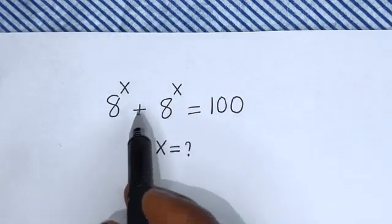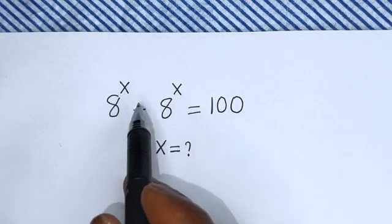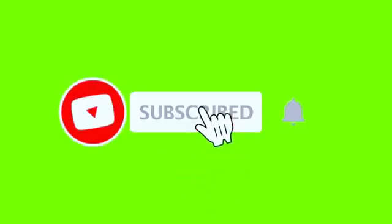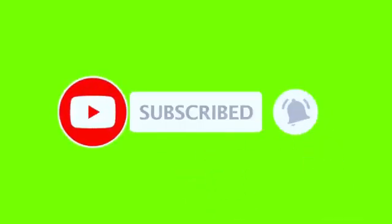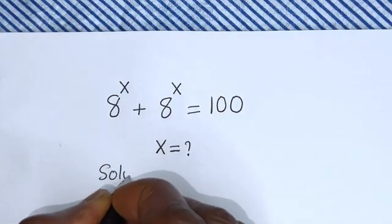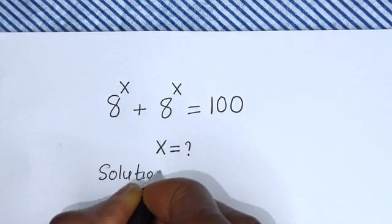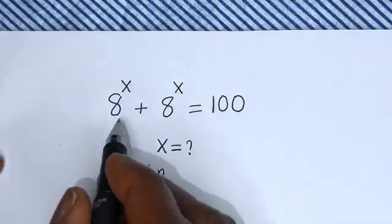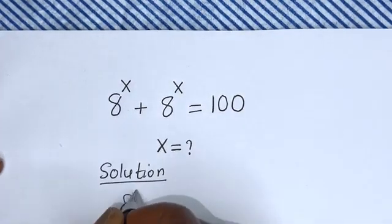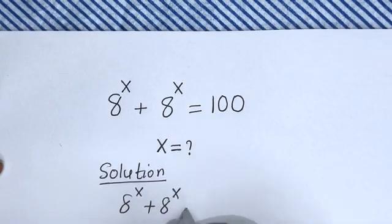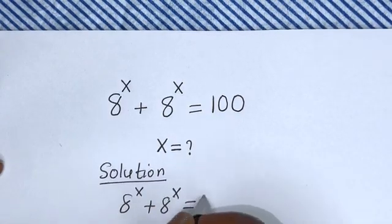Hello, how to solve for s in this equation: 8 raised to power s plus 8 raised to power s is equal to 100. But before we proceed, please don't forget to like, share, comment and subscribe to my channel. Thank you. Solution: we have 8 raised to power s plus 8 raised to power s is equal to 100.